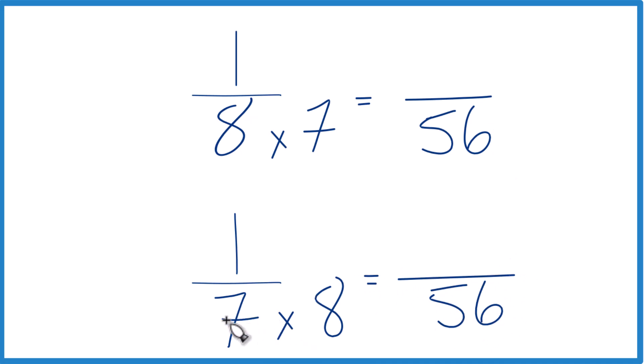But we can't just multiply the denominator by 8 here. We have to also multiply the numerator. That's because 8 over 8 is just 1. So we're only multiplying by 1. We don't change the value, just the way it's represented.